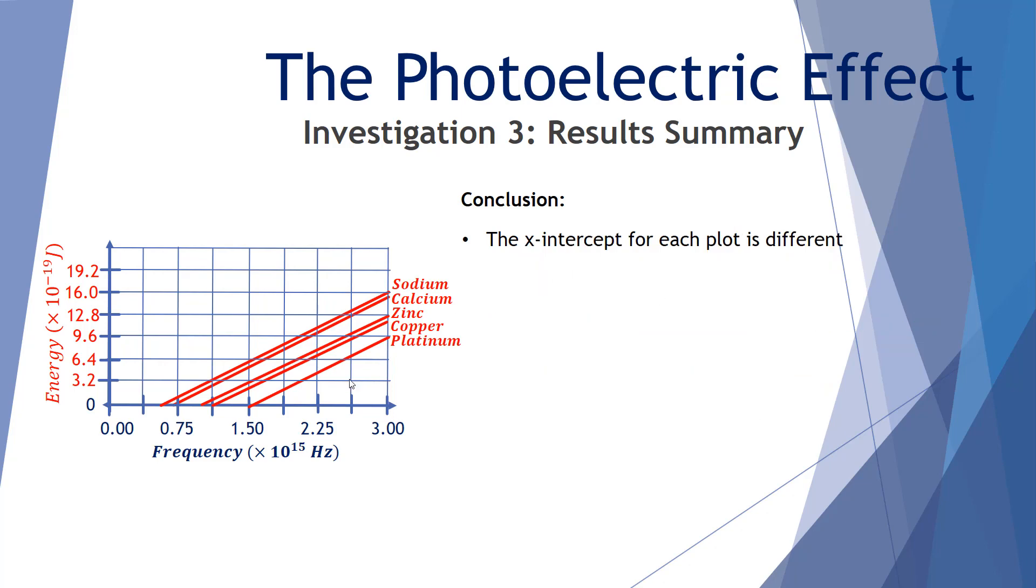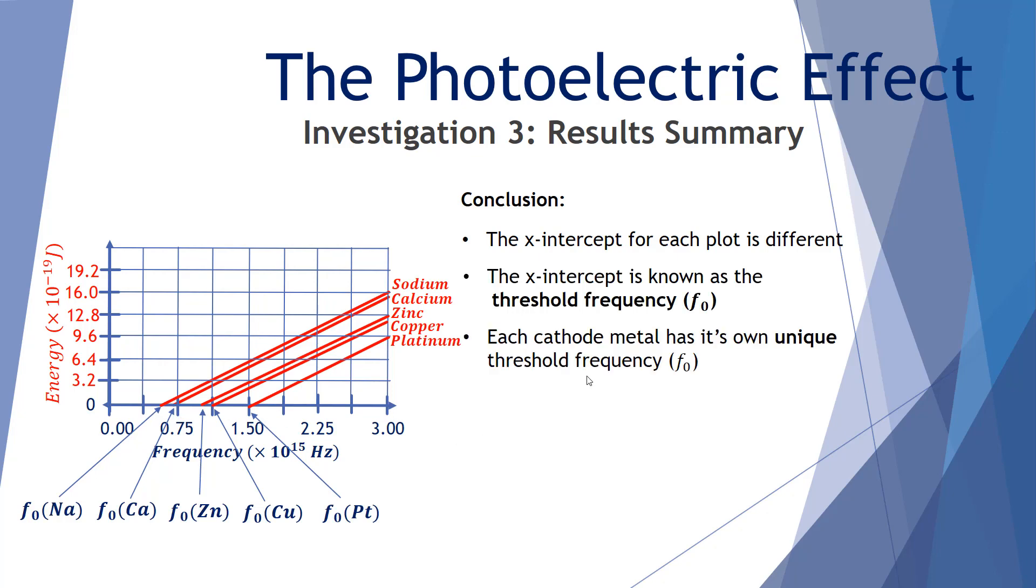Further our conclusion. The x-intercept of each plot is different. The x-intercept is known as the threshold frequency, and we use an italic f with a subscript zero. So this point here on the sodium graph is the threshold frequency for sodium where it crosses the x-axis. This is the threshold frequency for calcium, and so forth for zinc, copper, and platinum. And you can see it changes along the x-axis. Each cathode metal has its own unique threshold frequency.